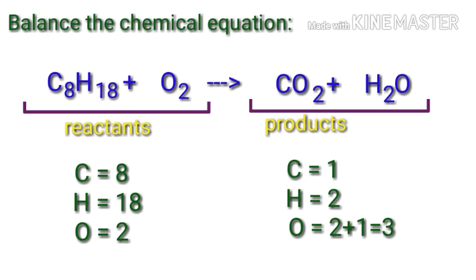The number of atoms is not balanced on both sides. To balance the chemical equation, we need to make use of coefficients. A coefficient is a number that we place in front of a chemical formula.